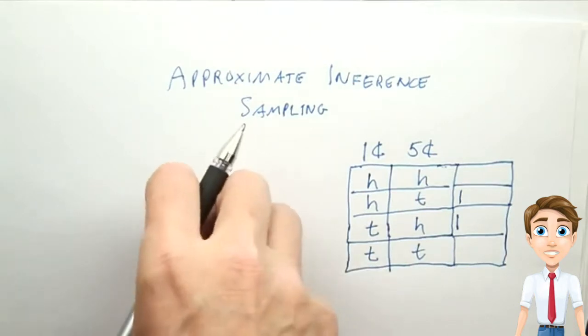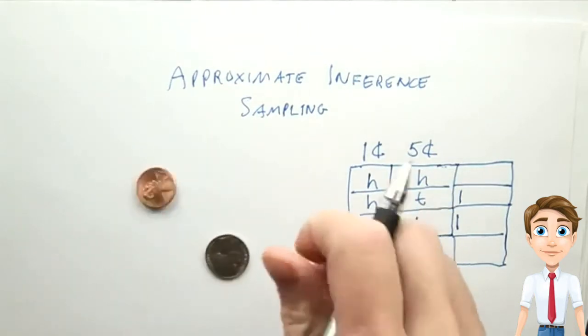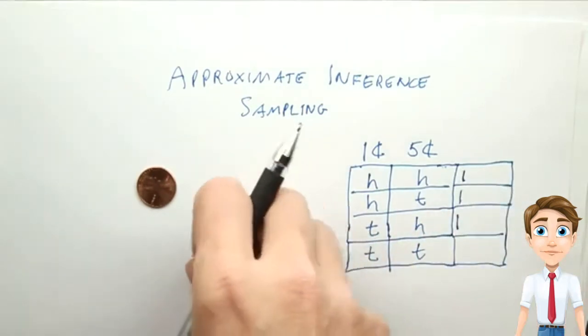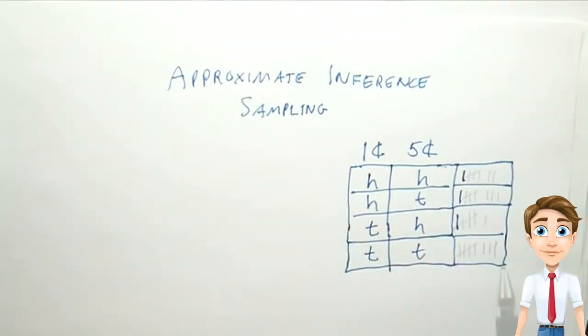We repeat that process and keep repeating it until we got enough counts that we could estimate the joint probability distribution by looking at the counts.